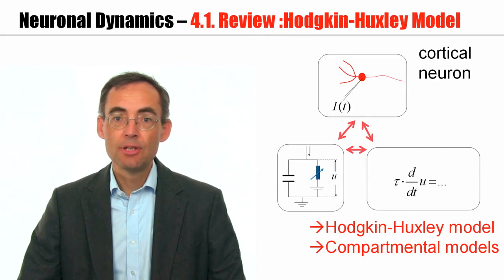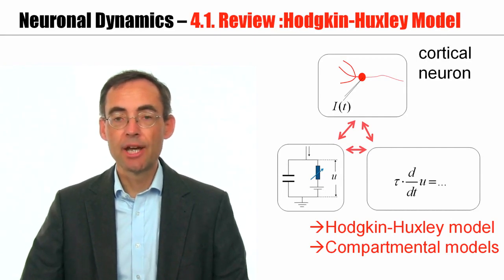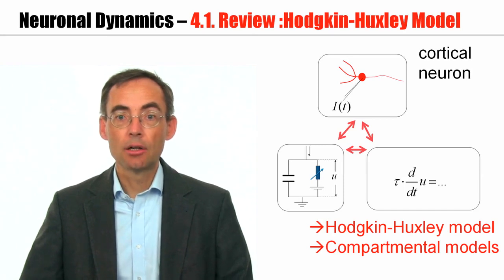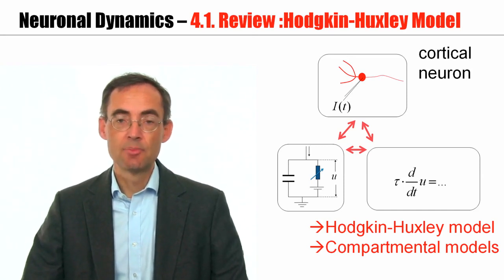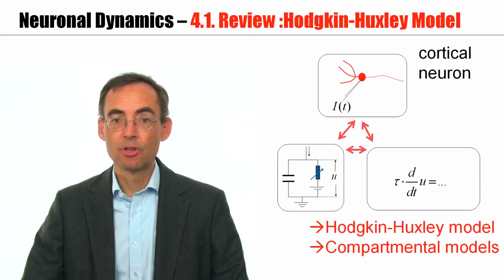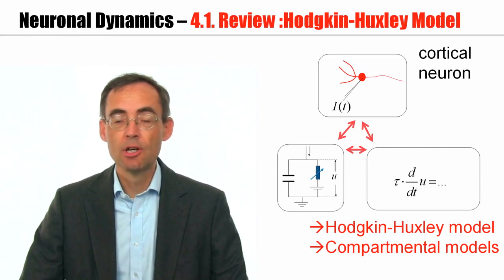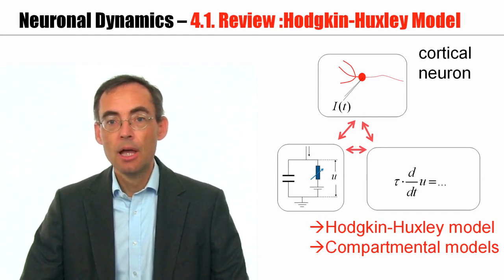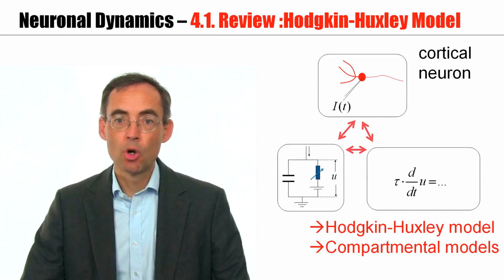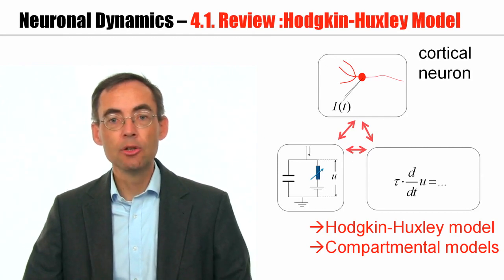If you look at one of these detailed models, it has a rather complicated structure. There are maybe 75 different ion channel types. There might be many different ion channels distributed across a dendrite with many, many compartments. And such a detailed neuron model is indeed capable of reproducing many phenomena of real neurons.